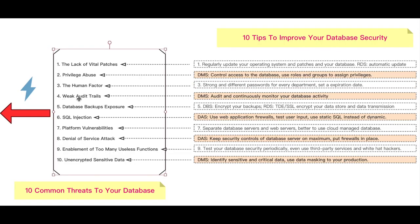Next: weak audit trail. A weak audit trail gives everyone a chance to do harm to your database in silence. Effective monitoring should allow you to spot when an account has been compromised, when an employee is carrying out suspicious activities, or when your database is under attack. It should also help you determine if accounts are created without your permission, for example by a hacker. We recommend you take advantage of DMS on Alibaba Cloud to do database auditing.